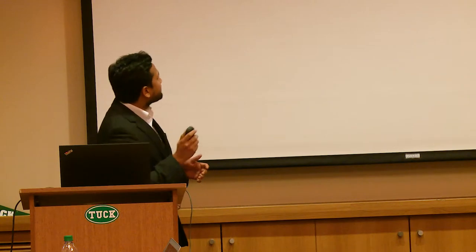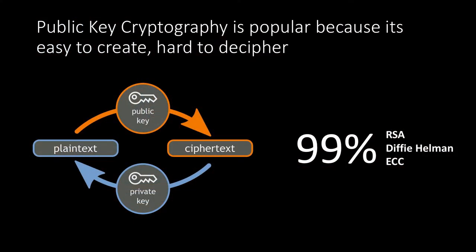Now we're going to talk about cryptography — hopefully a little bit simpler. Public key cryptography is the most popular concept in cryptography. It's easy to create and really hard to decipher, which is why it's so popular today — it runs most of our browsers, most online transactions, signatures, and so on. We have a plain text — a file, an image, an email — it's encrypted with a public key that everybody knows, but to decipher it back to plain text you need a private key. These two keys could be numbers or anything at all. The whole concept of public key cryptography works on the fact that if you have a public key, it's nearly impossible to derive the private key to decipher it.